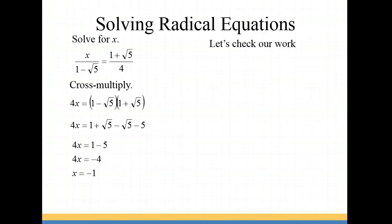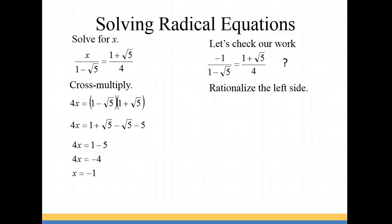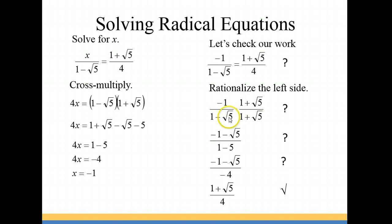Now we're going to check our work, so we're going to replace x with negative 1. These two sides of the equation don't look exactly like each other, but we're going to manipulate the left side to make it look like the right side by rationalizing it — multiplying the numerator and denominator by the conjugate, which is (1 plus √5). Our numerator becomes negative 1 minus √5, and our denominator gives us 1 minus 5, which is negative 4. So we have (negative 1 minus √5) over negative 4. Multiply every term by negative 1 and you get (1 plus √5) over 4. Now it matches the right side, so it checks.